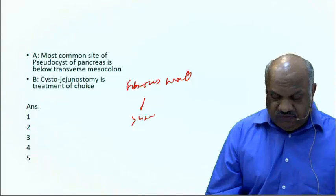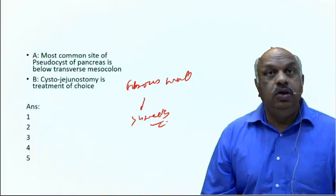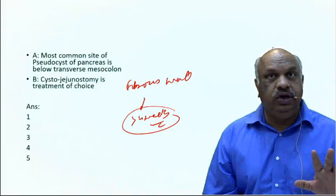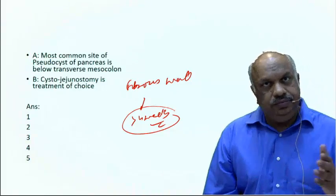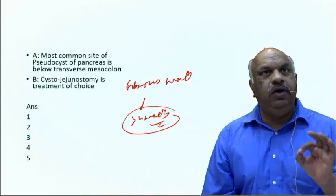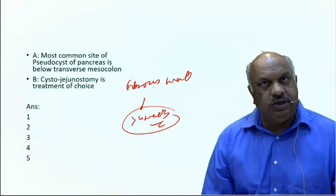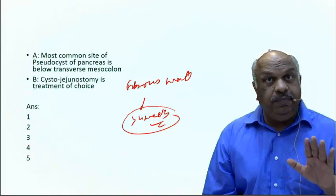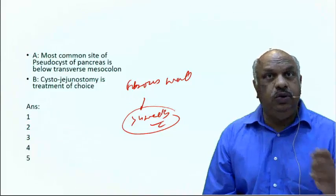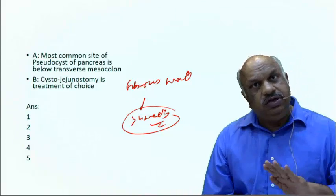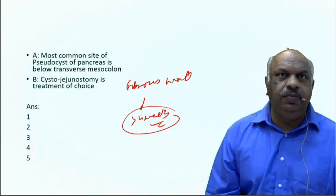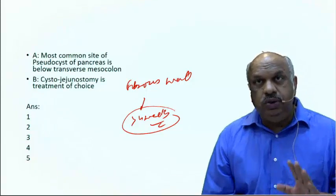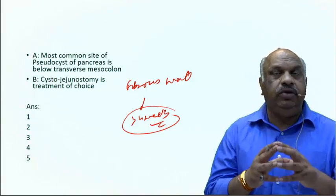The fibrous wall forms after four weeks, so pseudocyst only develops after four weeks. Before four weeks, we call it peripancreatic fluid collection, managed conservatively unless infected. If infected, you drain it; otherwise it either disappears or a fibrous wall forms.